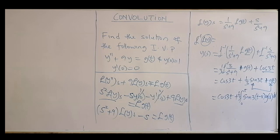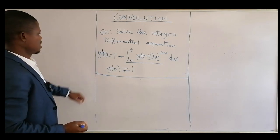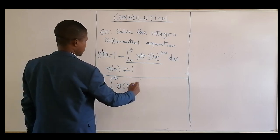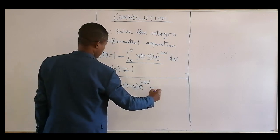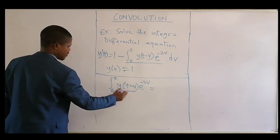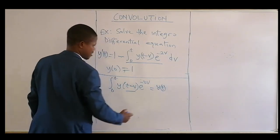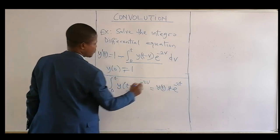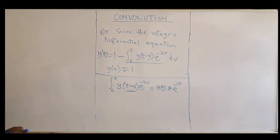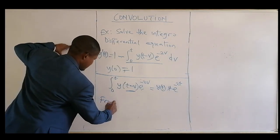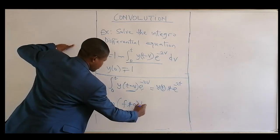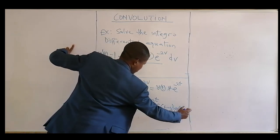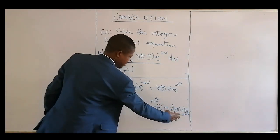Now for the next question. We have the convolution integral from 0 to t of y(t - v) times e^(-2v) dv. Using the convolution definition, f * g of t equals the integral from 0 to t of f(t - v) times g(v) dv, we recognize this as y(t) convolved with e^(-2t).